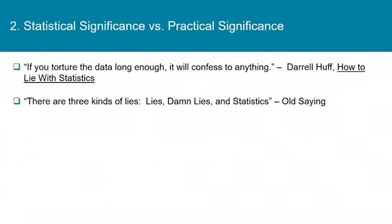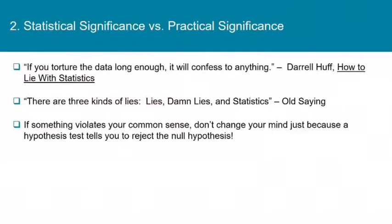There's an old saying in the book How to Lie with Statistics by Daryl Huff: 'If you torture the data long enough, it will confess to anything.' And we've all heard that there are three kinds of lies: lies, damn lies, and statistics. People use statistical tests on data that are improperly gathered or from populations that don't lend themselves to these methods. If something violates your common sense, don't change your mind just because a hypothesis test tells you to reject the null. We are still responsible for understanding these tests and making sure results make sense.